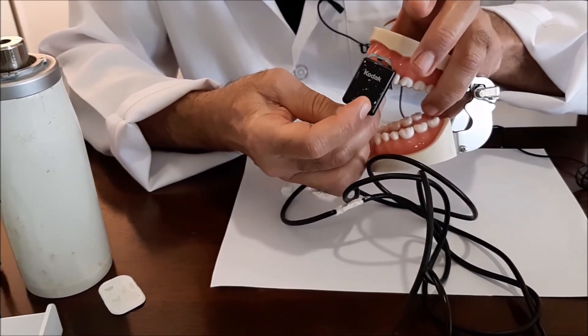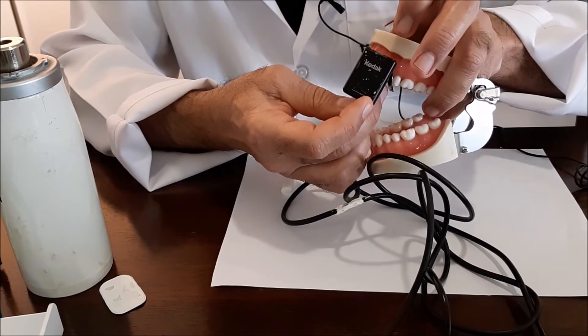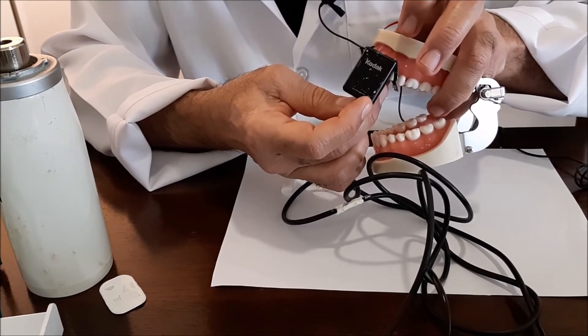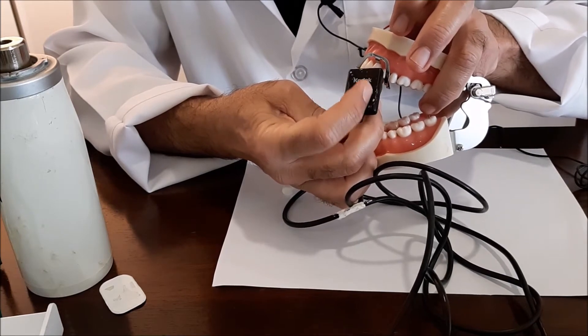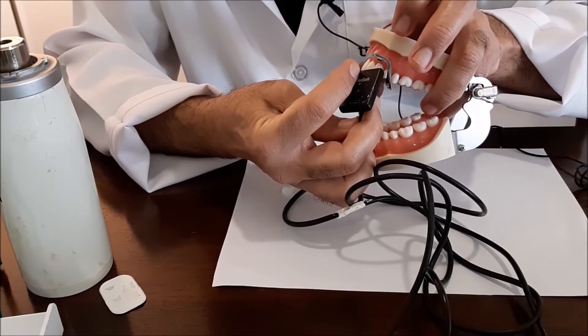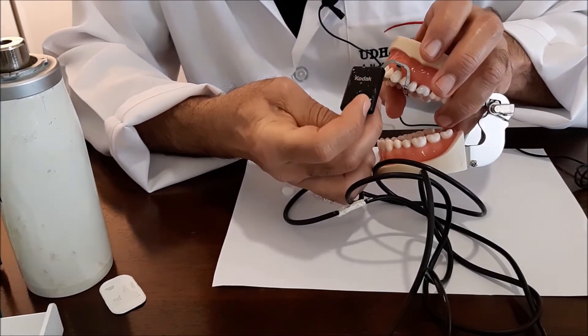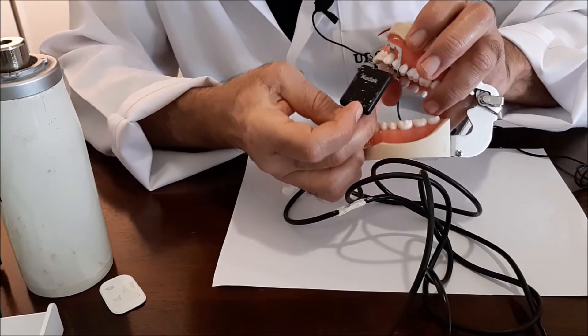It means instead of placing the sensor just exactly behind the canine, you place the sensor this way, so that the canine will be at this dimension of the sensor.